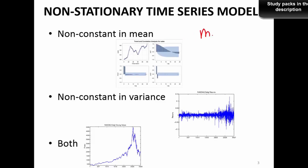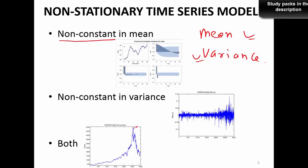The two important things are the mean of the time series and the variance. We are concerned about mean and variance when trying to understand whether a series is stationary or not. Mean and variance have to be constant for a time series to be called stationary. The first case of non-stationarity can come from the mean being non-constant — as you can see in this time series graph, the mean is increasing over time, showing an increasing trend.